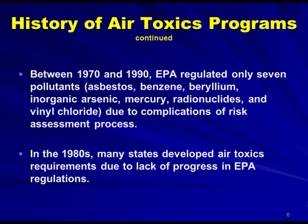Those seven pollutants were asbestos, benzene, beryllium, inorganic arsenic, mercury, radionuclides, and vinyl chloride. This was due to complications of the risk assessment process. In the 1980s, many states developed their own air toxics requirements due to a lack of progress in EPA regulations.